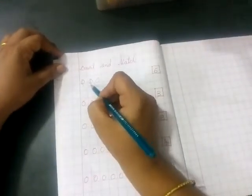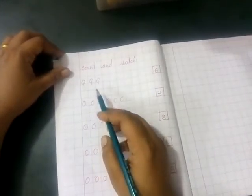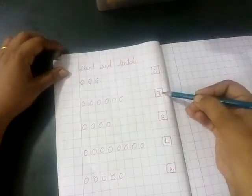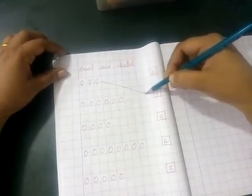1, 2, 3. How many balls are here? Remember, there are 3 balls. Where is number 3? Yes. So, match this to number 3.